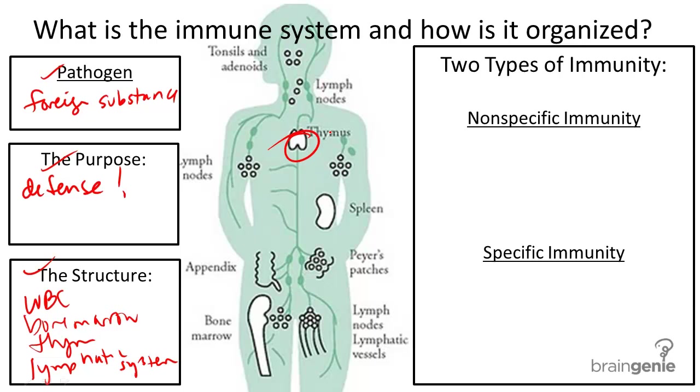And these include lymph nodes, tonsils, bone marrow, and other ducts.